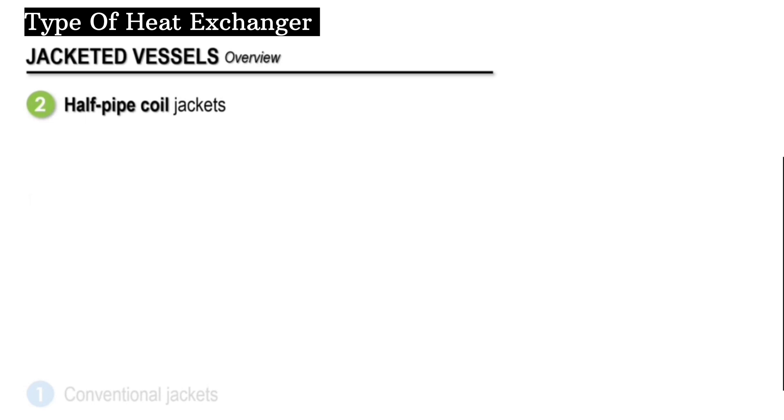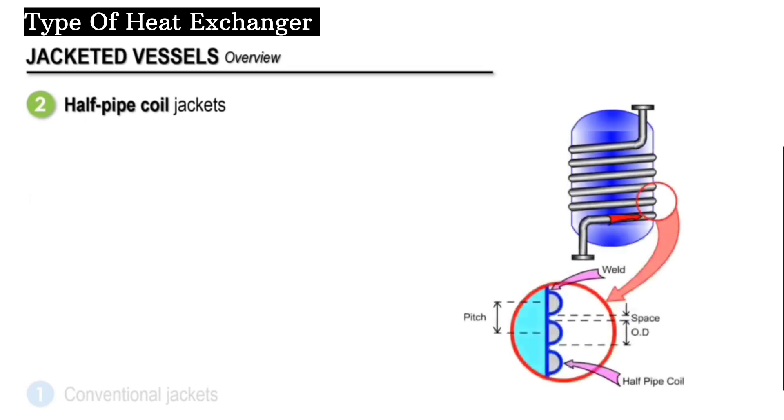In half-pipe coil jackets, half pipes are welded onto the vessel to form a coil. The heat transfer fluid flows through the coil and heats or cools down the vessel through conduction. Here again, the fluids do not mix.